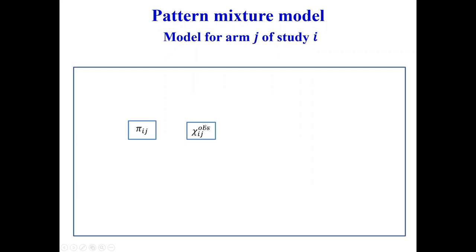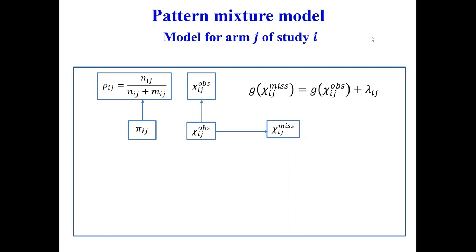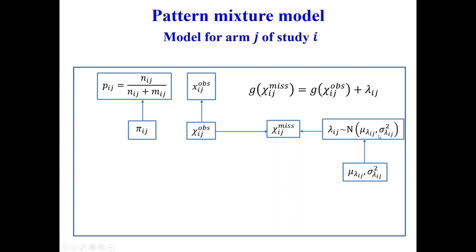I'll try to make a conceptual path diagram of the model. We have the true outcome and the true probability of observing data. I use Greek letters to denote population parameters. I can estimate these two from the data — I know from my data the observed outcome and the probability of observing a value for a participant. What I do not know is the outcome in the missing participants, so I make some assumption about how the mean value or risk in missing participants relates to the observed outcome.